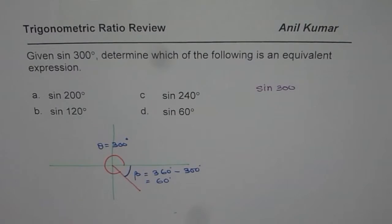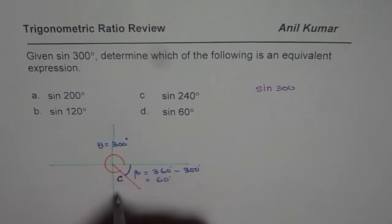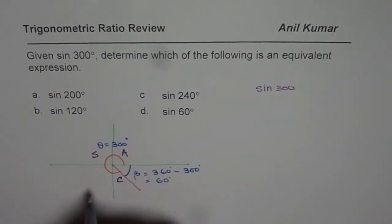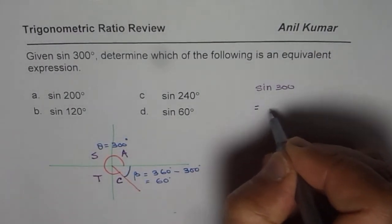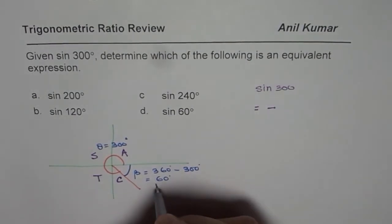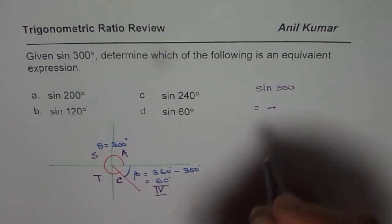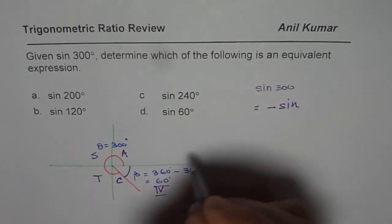The second thing which you get is you have to apply the CAST rule. So cosine is positive here, all are positive in quadrant 1, sine in quadrant 2, and tan in quadrant 3. Now since we are talking about sine, we know this is equal to a negative value since we are in quadrant 4. That is one thing we know.